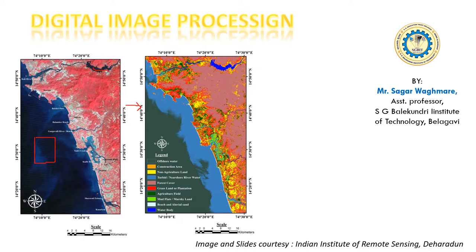I classified this image into eight classes. Once I do this, I'll not only be able to identify the features, but I can also calculate how much area a particular feature has covered. For example, this white patch at the interface between land and water is defined as beach sand. I can calculate how much beach sand, forest land, and water body coverage exists — all with the help of digital image processing.